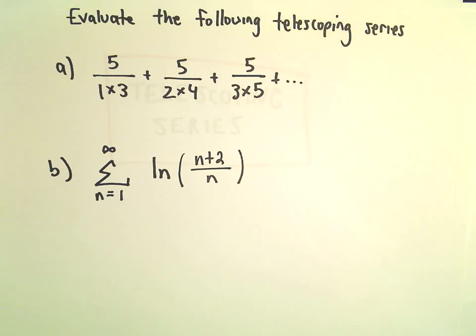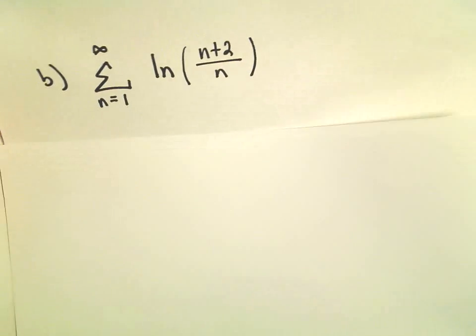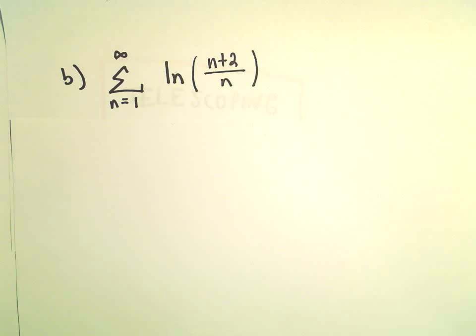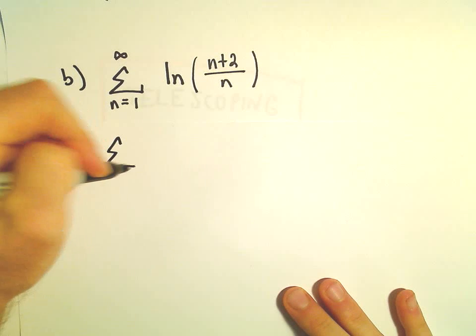At first, maybe this doesn't quite look like a telescoping series. If you write things out, it's not going to be readily clear. Usually when I think about telescoping series, I think about all the things canceling out. And to me, if I were to start just expanding this out, it wouldn't be obvious how things are canceling out.